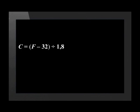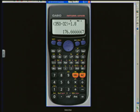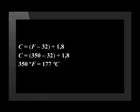Usually, we would need to convert all the measurements to metric measurements. Today, we're just going to convert the temperature. We start with the formula: degrees Celsius equals degrees Fahrenheit subtract 32 in brackets, divided by 1.8. We replace the Fahrenheit temperature with 350. Using our calculator, we push open brackets, 350 minus 32, close brackets, divided by 1.8, equals, and we get the answer of 176.6 recurring. This means that 350 degrees Fahrenheit equals 177 degrees Celsius.